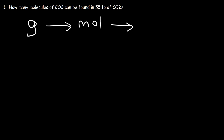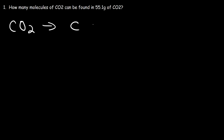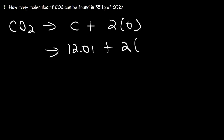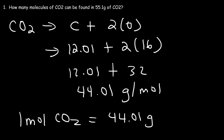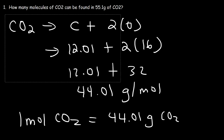So let's start by finding the molar mass of CO2. We have one carbon atom and two oxygen atoms. Carbon has an atomic mass of 12.01 and oxygen is 16. So that's going to be 12.01 plus 2 times 16, which is 32. So that's 44.01 grams per mole. One mole of CO2 has a mass of 44.01 grams, and we're going to use that to convert grams to moles in the first step.